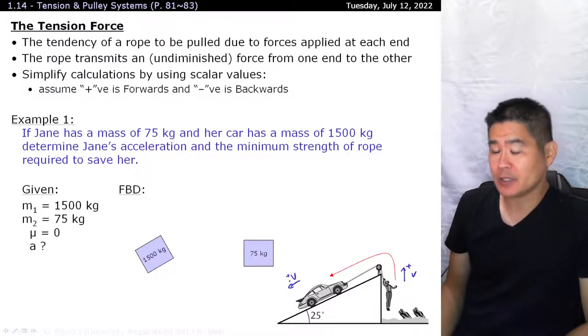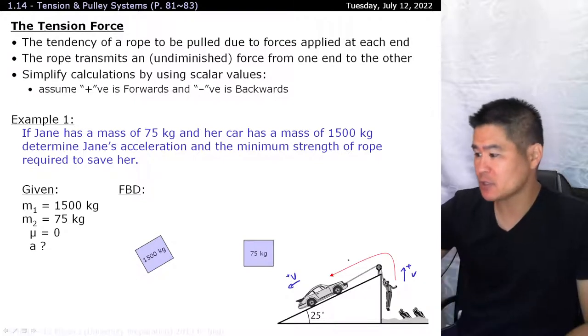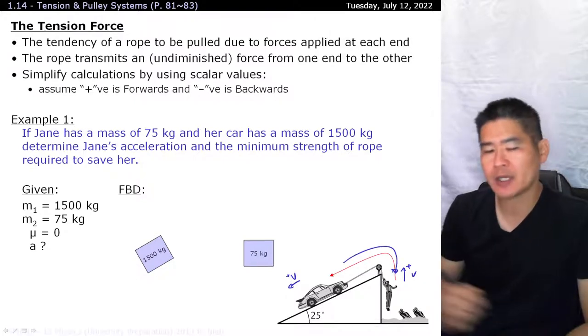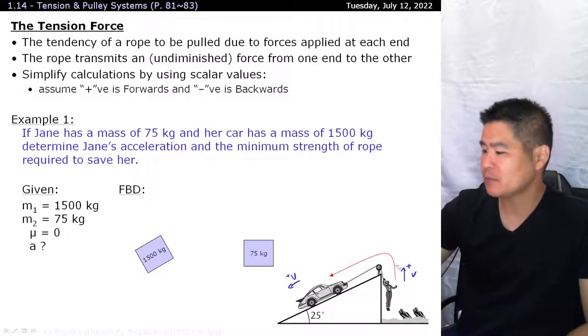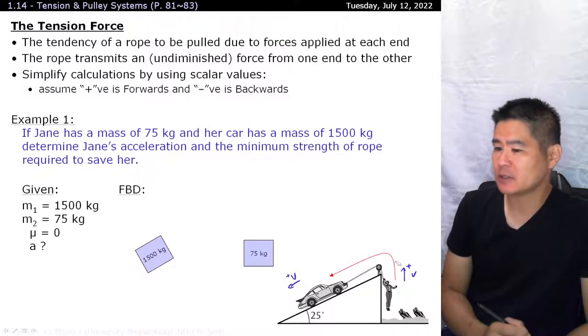So we take the assumption and then we do our calculations and we hope that acceleration is positive. If our answer is negative, that means our assumption is wrong and we need to recalculate everything again in the opposite direction.